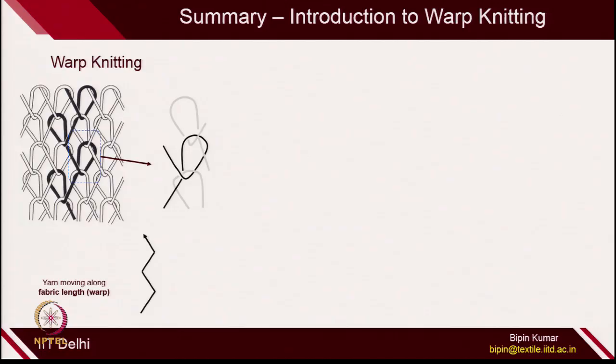Let us do a quick recap of what we covered in the last lecture. We have seen how loops are connected in warp knitted structures. The yarn in a warp knitted structure follows the length direction, which is why it is called warp knitting. Each loop is connected with different courses in the structure, making it different from a normal weft knitted structure — it is not as extensible.